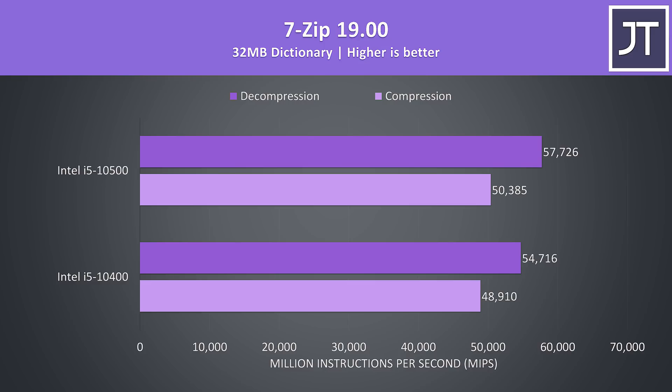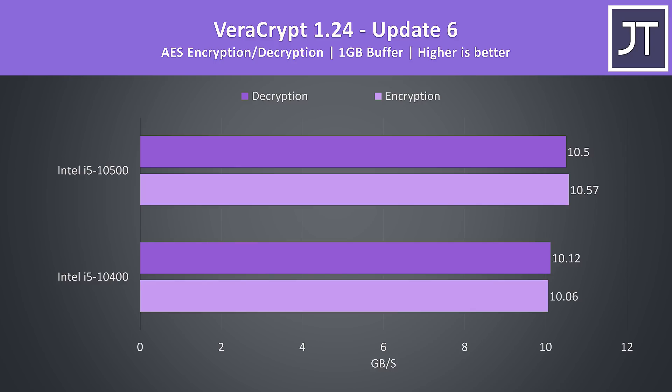7-zip was used to test compression and decompression speeds, and the 10500 was only 3% faster for compression and 5.5% ahead for decompression. Veracrypt was used to test AES encryption and decryption speeds, and the 10500 was just 4% faster in decryption and 5% faster for encryption.